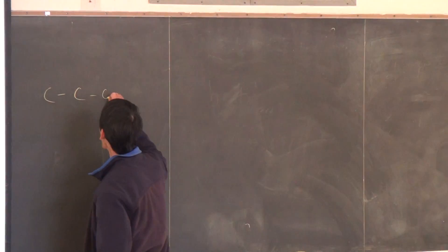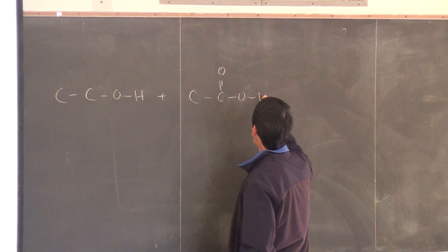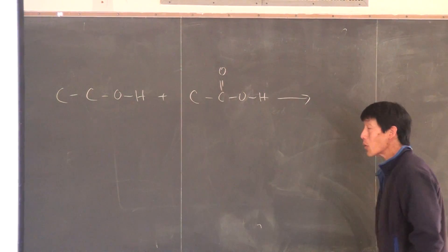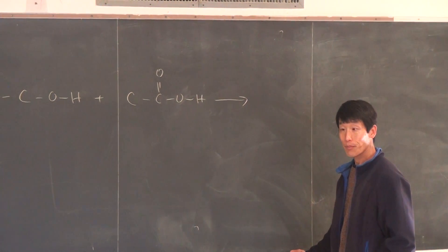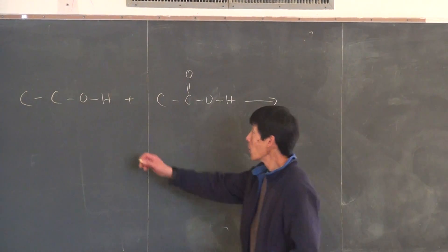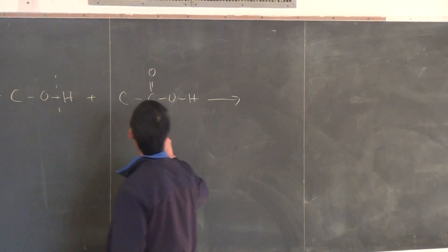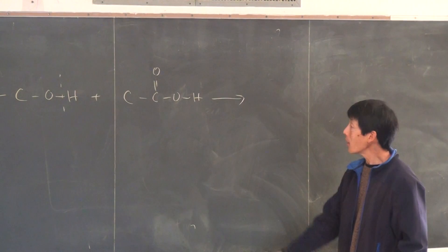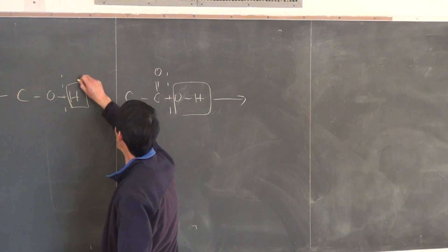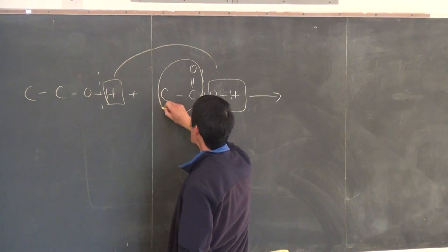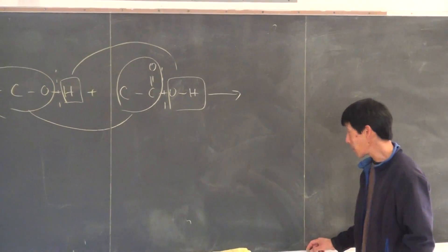Let's say you have ethanol plus the acid to produce our products. What was the bond that breaks in the ethanol — was it the carbon-oxygen bond or the oxygen-hydrogen bond? This is the bond that breaks here. What was the bond that breaks in the acid? This bond breaks there. Note that the OH combines with the H to form water, and then this part combines with this fragment to form the ester.